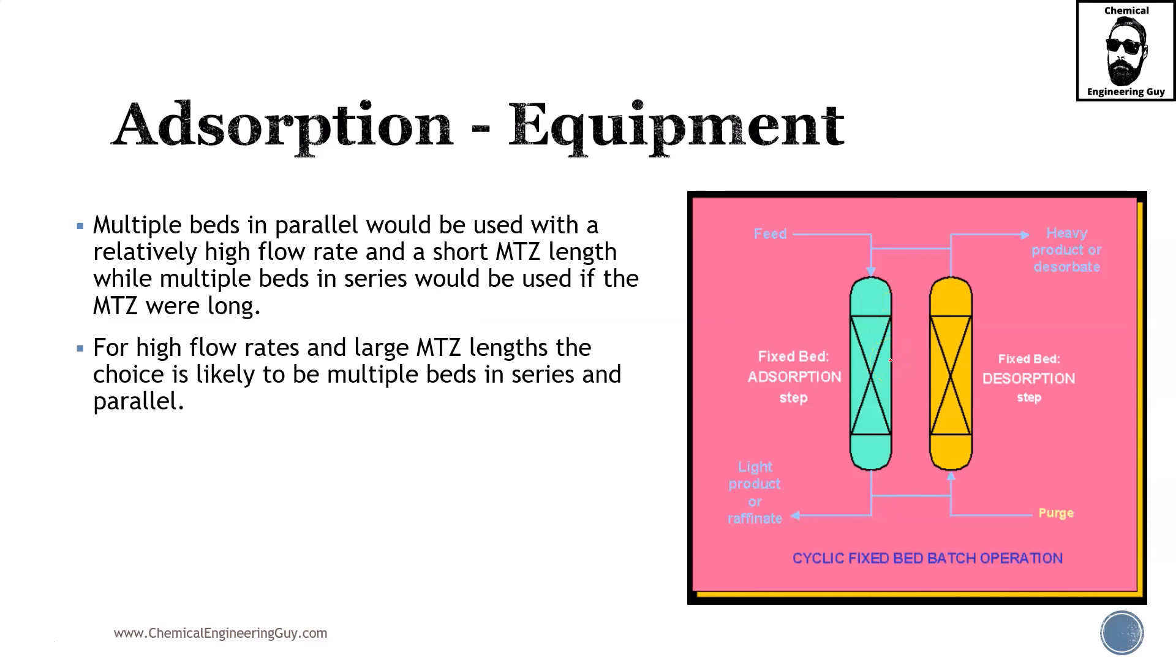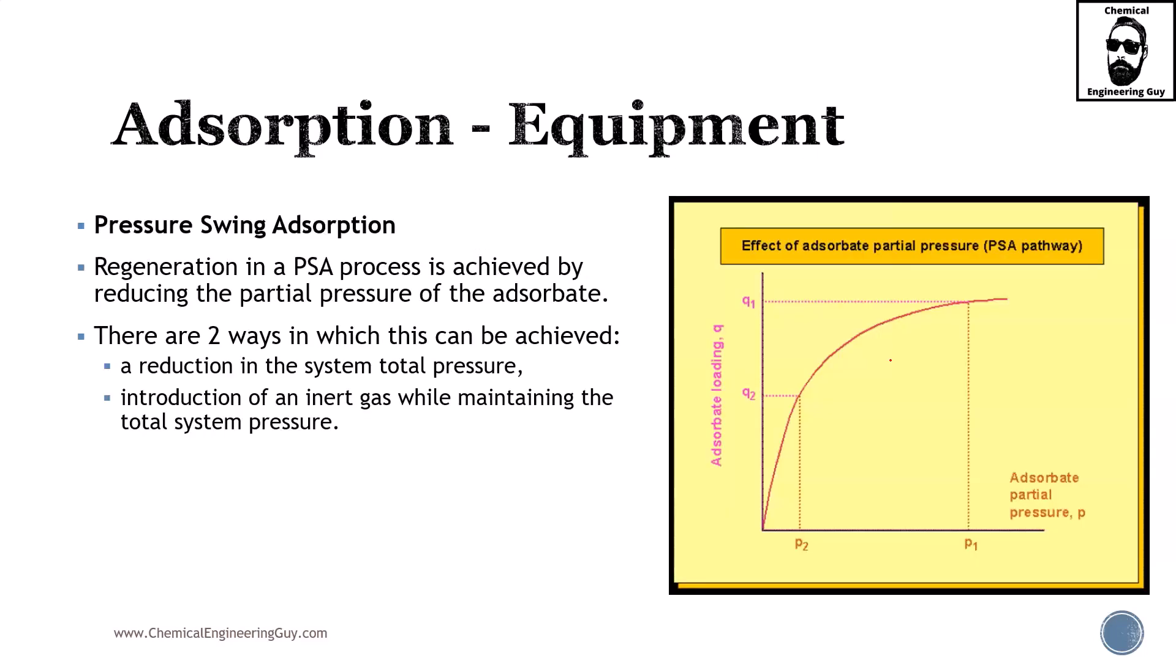Multiple beds in parallel would be used with a relatively high flow rate and a short MTZ length, while multiple beds in series would be used if the MTZ were long. If you had longer MTZ, then you will have more mass transfer. For high flow rates and large MTZ lengths, the choice is likely to be multiple beds in series and parallel, because you don't want to have a huge, very tall column. Rather, you will prefer to have lots of columns, much safer, but it costs more, more capital cost.